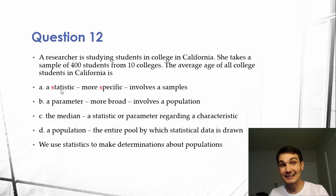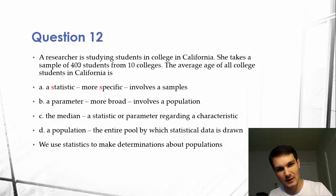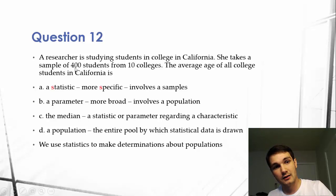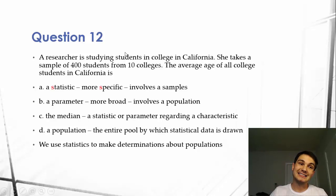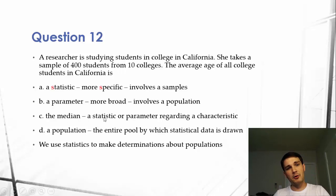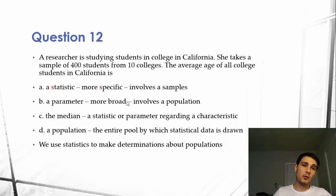A statistic is more specific — it's information about the 400 students at the 10 colleges, whatever their average age would be. That would be a statistic. A parameter, however, would be the average age of all the students in California.